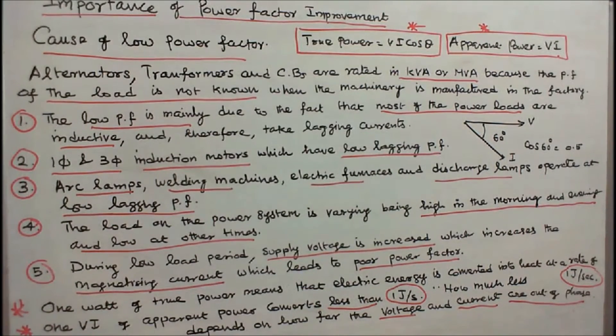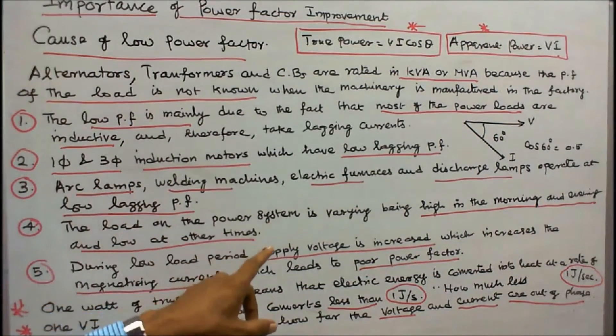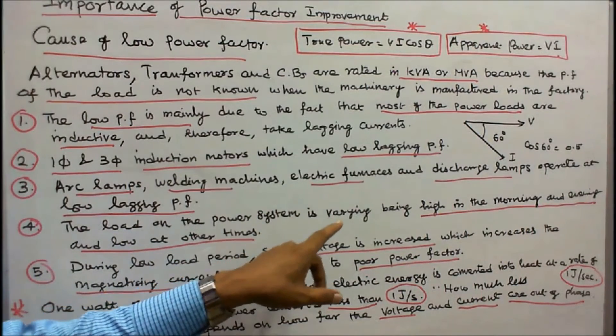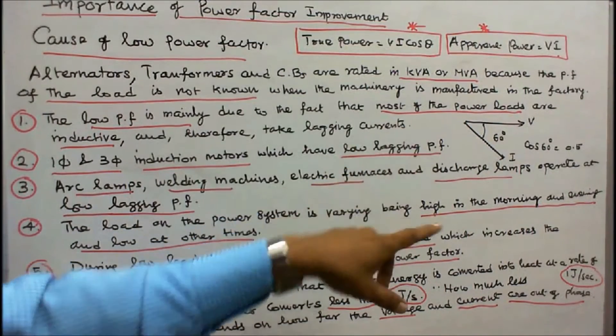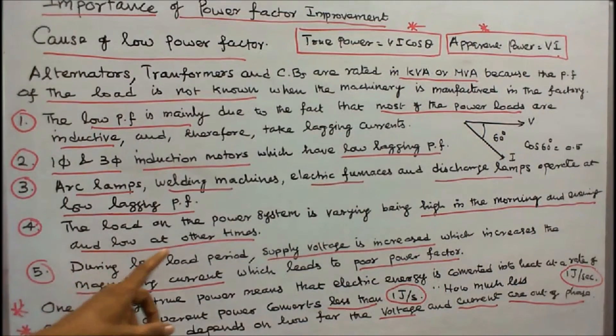Number 4: The load on the power system is varying, being high in the morning and evening and low at other times. Number 5: During low load period.